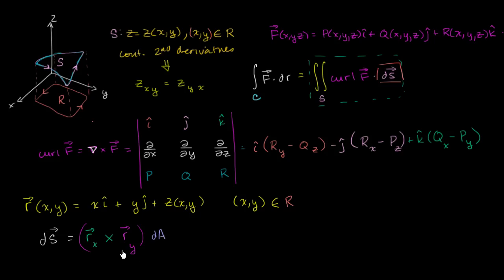We need to be careful, based on how we've parameterized this position vector function, whether this cross product really points in the right direction — the direction that we need to be oriented in. If we're traversing a boundary like this, we want to make sure the surface is oriented the right way. If you were to walk around this boundary in this direction with the surface to your left, your head would point up, so we need to make sure this vector is definitely going to be pointed up, above the surface.